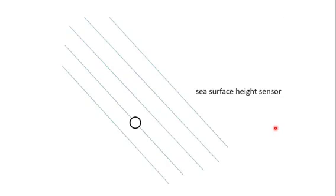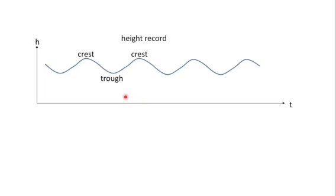Now, suppose we deployed a sensor that could measure the height of the sea surface at any given time. So here's our sensor that measures sea surface height. The sensor records the height, h, as a function of time, t. So if you watched as time progresses, you'd see a crest go by, and then a trough, then another crest, and so on, as these pass by the sensor. If we want to, we can measure the period of the wave train, i.e., the time it takes between successive crests. But there's nothing in this measurement to tell us how fast the wave is actually moving.